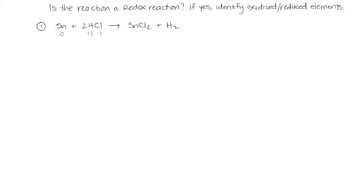Let's move over to the SnCl₂. Chlorine is minus one, and we have two of them, so we have a total negative charge of minus two. In order to be neutral, the tin must be plus two. H₂ is a diatomic in its elemental form, so it has an oxidation state of zero.